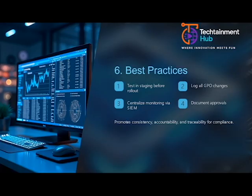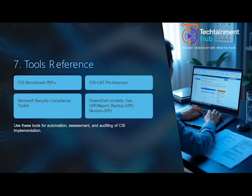Security is a continuous journey. Monitor CIS and Microsoft updates regularly and update your policies accordingly. Retrain your administrators to understand new CIS controls and how to apply them effectively. CIS 3.0 provides a strong, structured approach to securing enterprise systems. By using Group Policy, we centralise and enforce these settings efficiently. Regular auditing and validation are key to maintaining compliance and minimising risk.